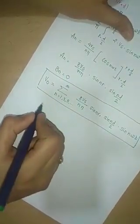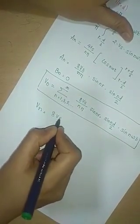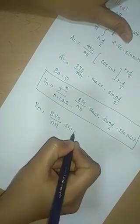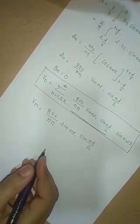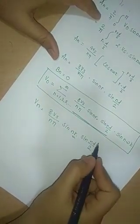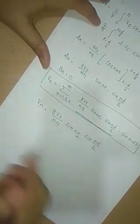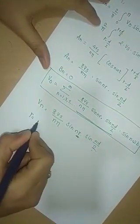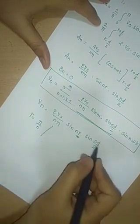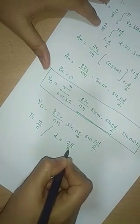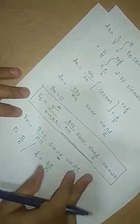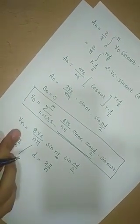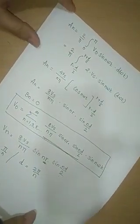The amplitude of the nth harmonic is given as: Vn = (8Vs)/(nπ) × sin(nγ) × sin(nd/2). The magnitude Vn is dependent upon the value of γ and d/2. When γ becomes equivalent to π/n or the value of d becomes equivalent to 2π/n, the nth harmonic gets eliminated from the output voltage, because at that time either the sin(nγ) term or the sin(nd/2) term becomes equivalent to 0.